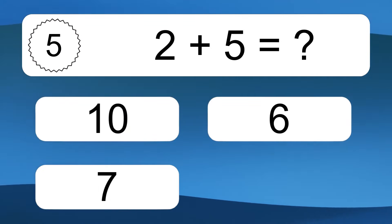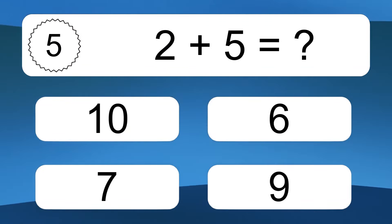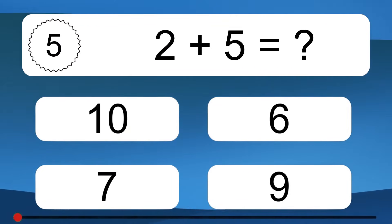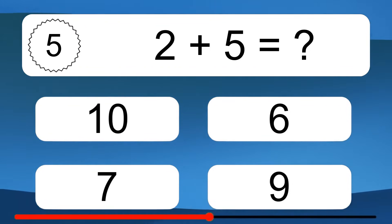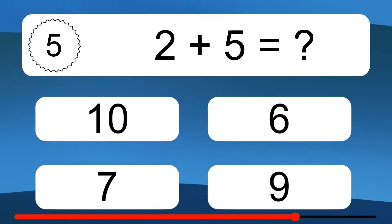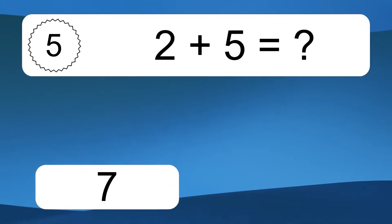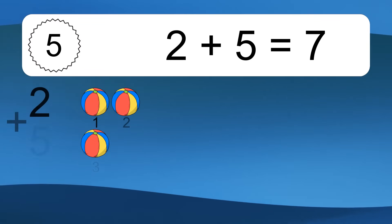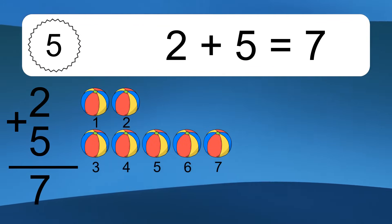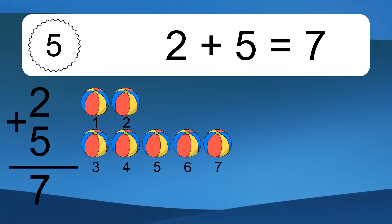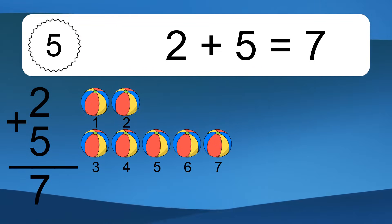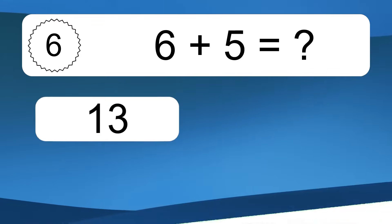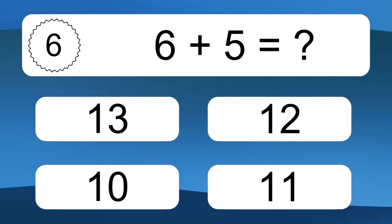2 plus 5 equals what? Let's count it. 1, 2, 3, 4, 5, 6, 7. 2 plus 5 equals 7.